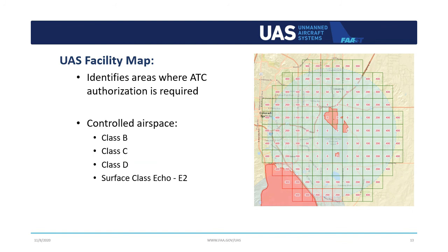If you're new to the drone community and find FAA aeronautical charts confusing, the UAS facility maps can also be a great resource for helping you understand when you would need an airspace authorization. If the area you would like to operate in requires an airspace authorization, there will be a grid map associated with it. Remember, these are not pre-approved areas, so you must receive an airspace authorization prior to operating in any of the classes of airspace listed there.